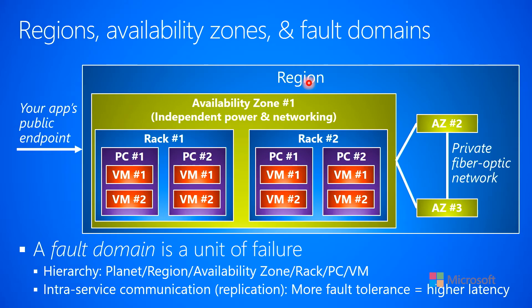Usually within these regions, we have different data centers, which we sometimes call availability zones. The availability zone has its own independent power and its own networking, so it's set up to be an isolation boundary. If one availability zone goes down — that is, it loses its power or its networking — that wouldn't affect other availability zones that are part of the same region. In fact, I show two other availability zones here, number two and number three.